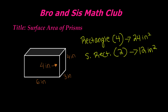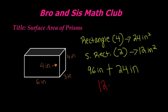So we have 96 inches, plus we have 12 times 2, which is 24 inches. 96 plus 24 gives us 120 inches squared. So this is the surface area of this rectangular prism: 120 inches squared.